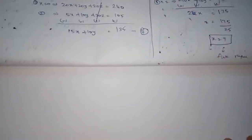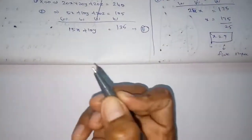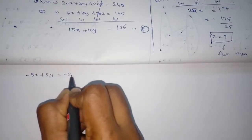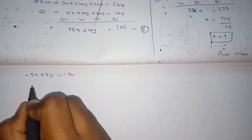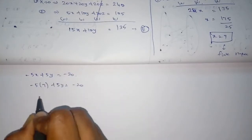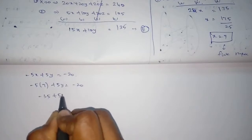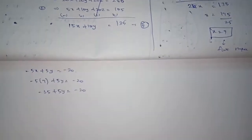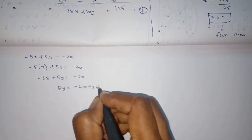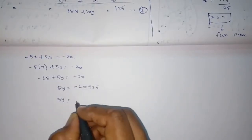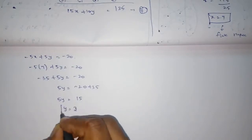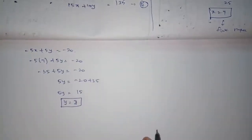So for the X value, I will substitute. From the 5th equation: minus 5X plus 5Y equals minus 20. Substituting X equals 7: minus 35 plus 5Y equals minus 20, so 5Y equals minus 20 plus 35, giving 5Y equals 15, so Y equals 3. Y equals 3 means there are 3 ten-rupee notes.